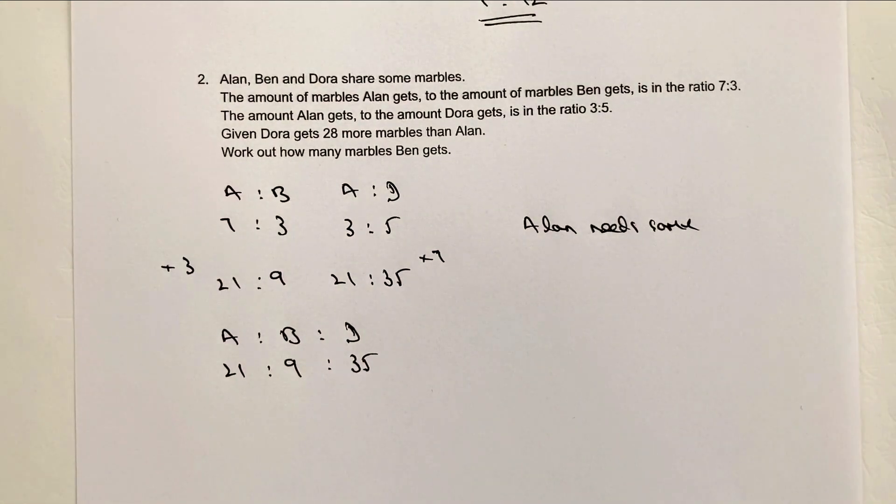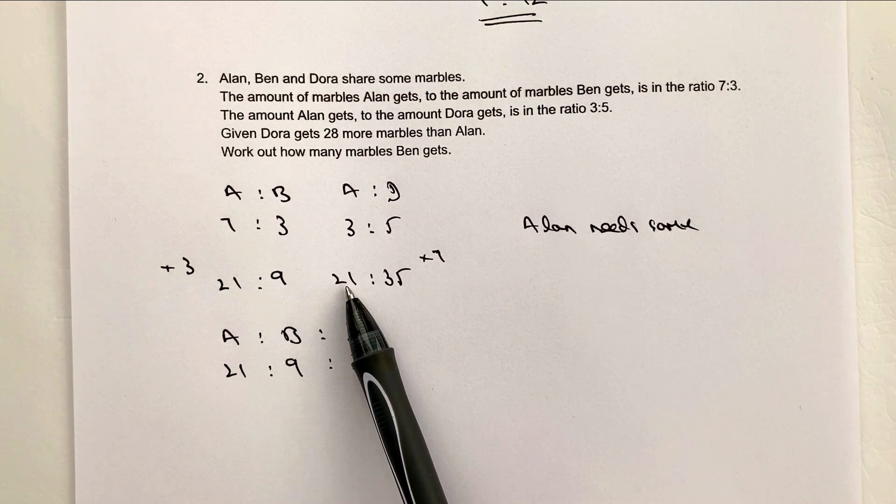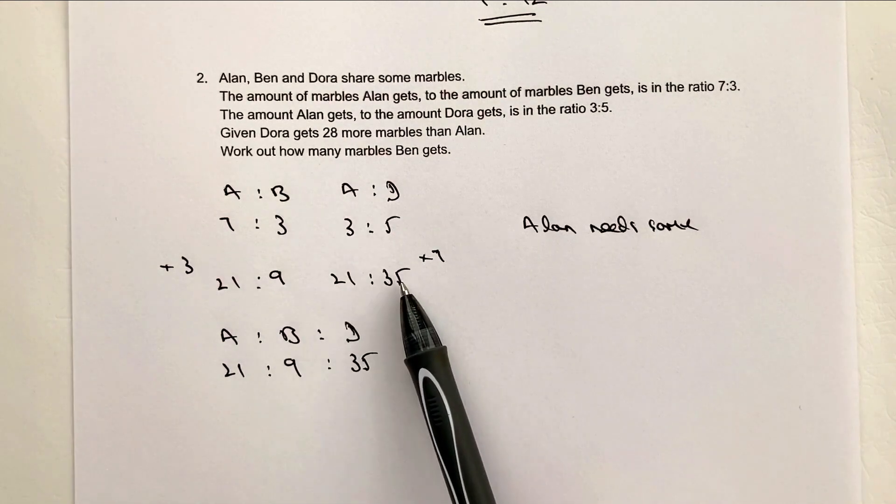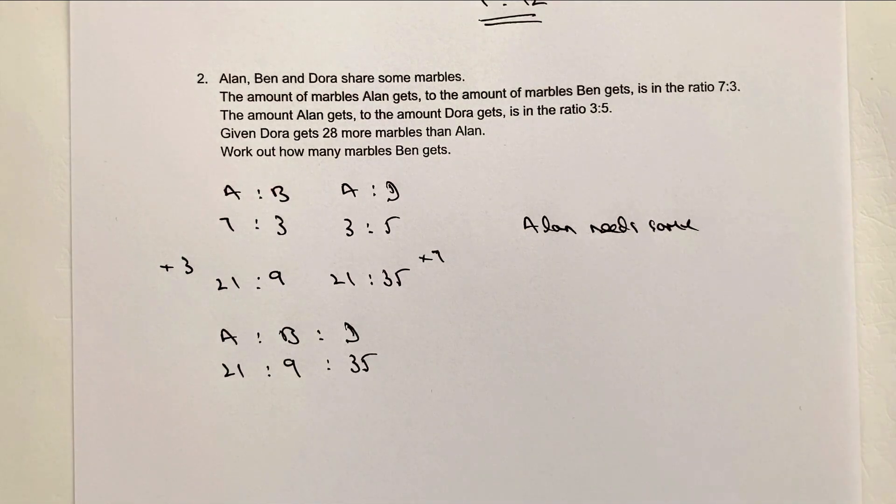So that's the ratio as it stands at the moment. So all we've done is we've made Alan have the same amount, 21 in both cases. And then we've said, well, Dora must have 35 and Ben must have 9. So that's where we are at the moment with our ratio. But then, like a lot of these questions, just gets a little bit more tricky.